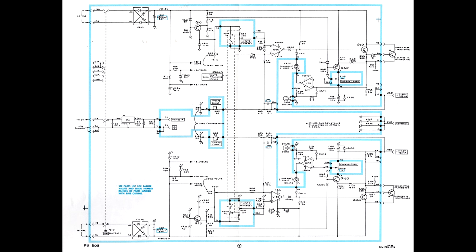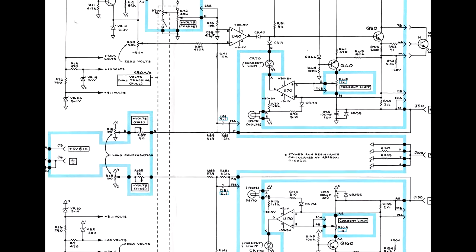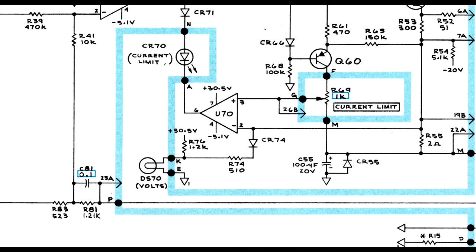If an output sticks at about 0.6 volts and the current limit light is on, you can disable the current limit circuit by removing U70 for the positive side, or U170 for the negative side. You should now be able to vary the output from 0 to 20 volts, but with no current limiting. If the output can be now varied, the failure may be caused by U70 or U60, or U170 or Q180 for the negative side.